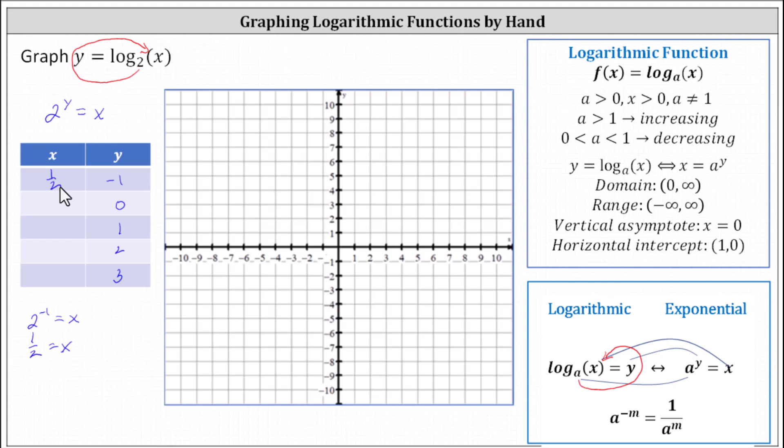Next, we have y equals zero. When y is equal to zero, we have two to the power of zero equals x, and therefore x equals one.